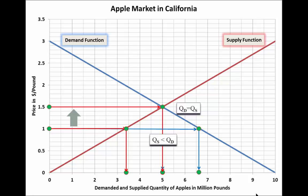The market pushes towards its equilibrium price of $1.50. Therefore, there is a tendency to always reach an equilibrium.